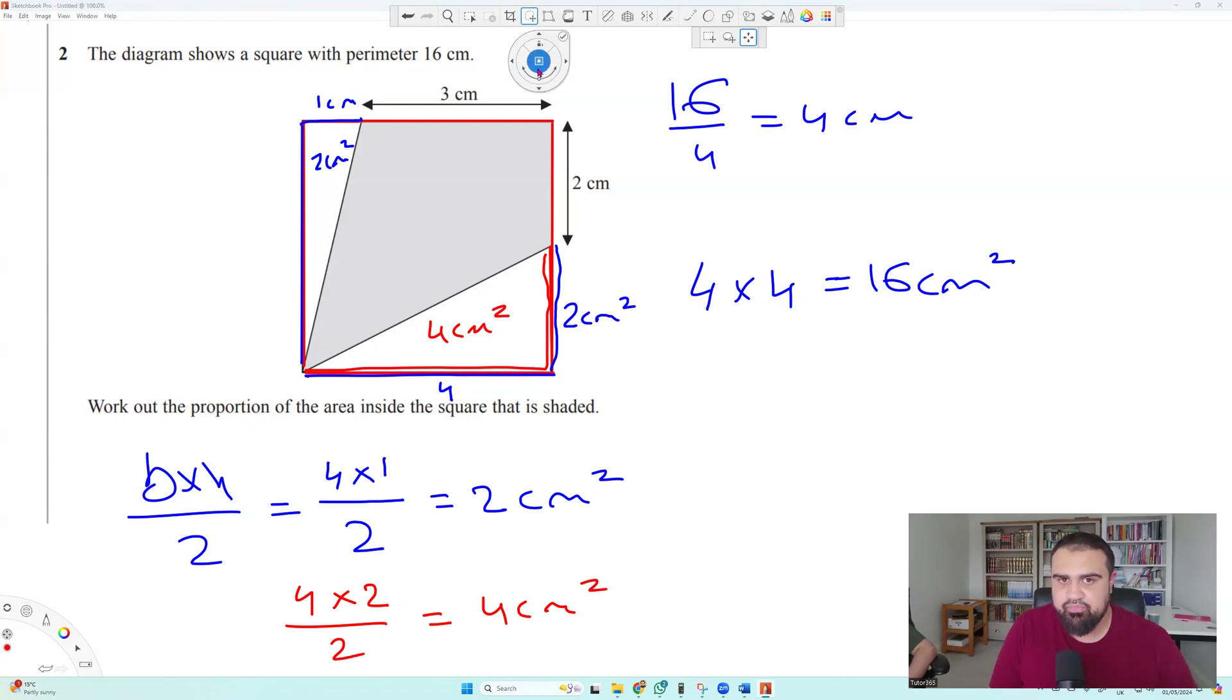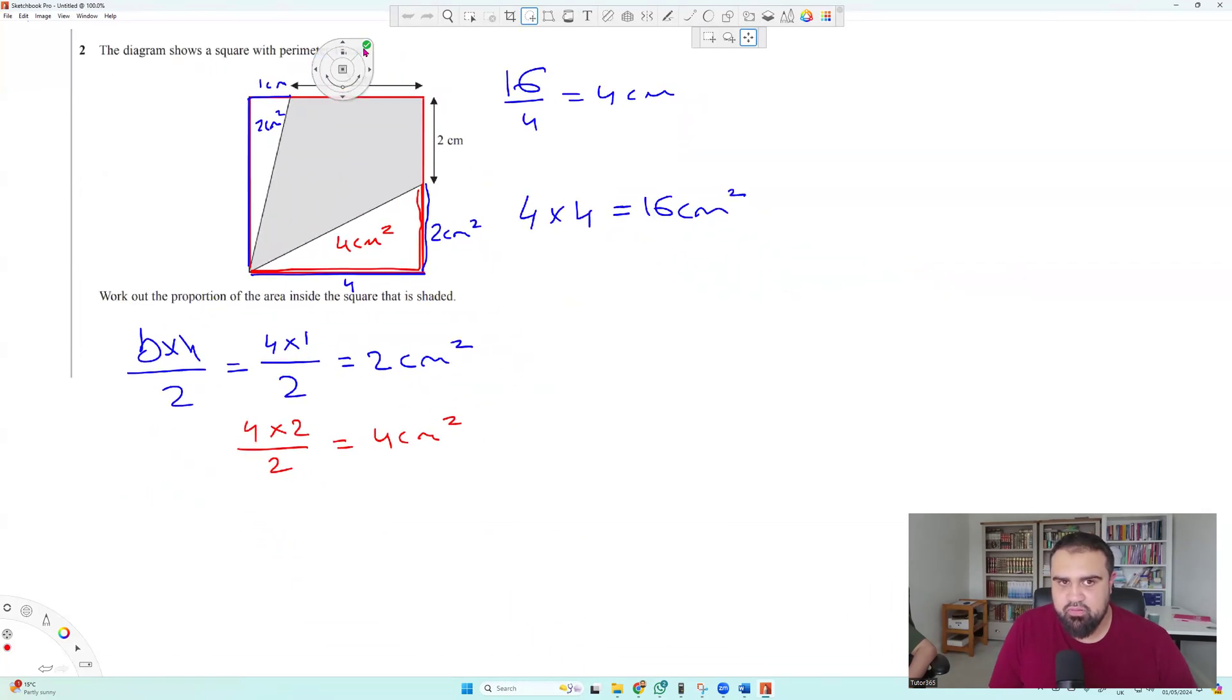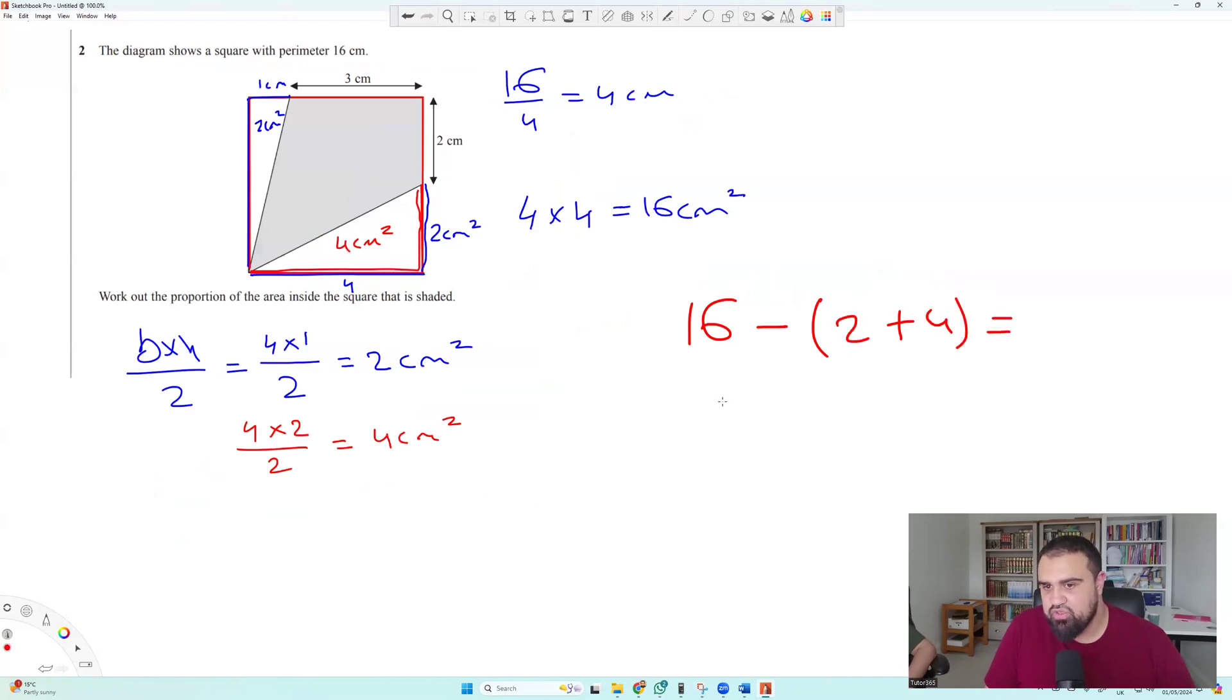Now, what's the final step? So the final step is to do 16 centimeters squared minus 4 centimeters squared minus 2 centimeters squared. Exactly. So 16 minus those triangles there. 16 minus 2 plus 4. Of course, it's 16 minus 10. Sorry, 16 minus 6, which is 10 centimeters squared. So you just say final answer, 10 centimeters squared.